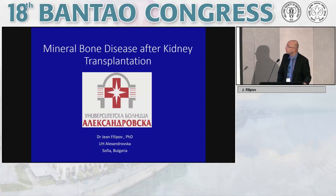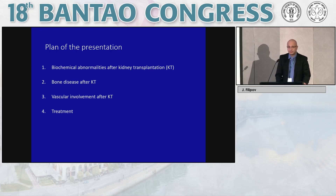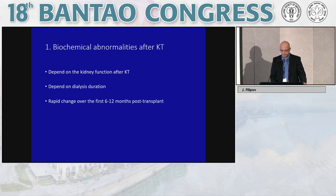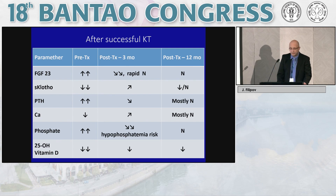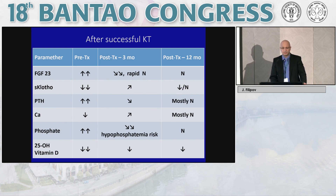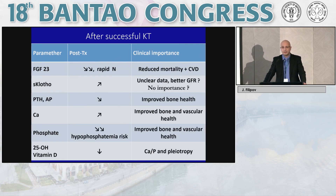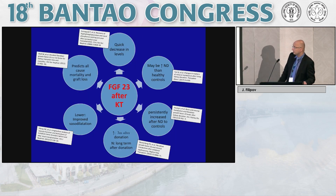The topic of this talk is mineral bone disease after kidney transplantation. The presentation consists of four points: biochemical abnormalities, vascular involvement, bony disease, and treatment. After successful kidney transplantation, there is a trend toward normalization of all parameters — FGF23, soluble Klotho, PTH, calcium, phosphate, and vitamin D — though parameters are not fully normalized. This improvement has clinical implications: reduced mortality, improved cardiovascular outcomes, improved bone health and vascular health.